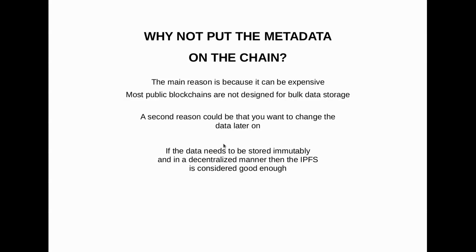The question then is: why not put the metadata on the blockchain rather than having it on some second file server? Well, the answer is that most public blockchains are not designed for bulk data storage. Blockchains are expensive when it comes to transactions and storing data, so it is better to put large quantities of data on some other server and then use the blockchain as a location for a pointer to that data — that's what that URI we were talking about earlier is all about. You can have a file server that is a centralized server, or if you want to go with the blockchain spirit of being decentralized, you can go with something called the InterPlanetary File System, which is a decentralized file server.